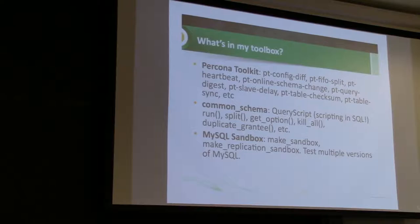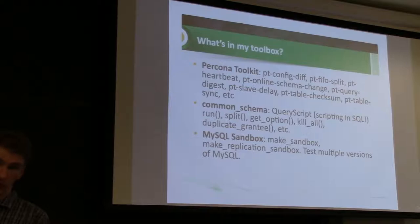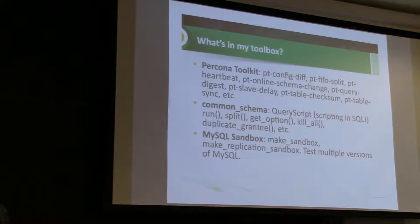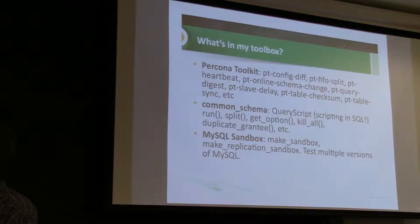pt-heartbeat is one that a lot of you are probably familiar with. It's very simple but very important. It lets you monitor how far your MySQL slaves are behind the master. If you use show slave status and look at seconds_behind_master, sometimes that's accurate and sometimes it's not, and MySQL still hasn't given us a reliable built-in way to do that. pt-heartbeat is a very easy way — it's just a replay statement that runs once per second on the master. If you want to know how far the slaves are behind, you pull the current timestamp from that and you can see.